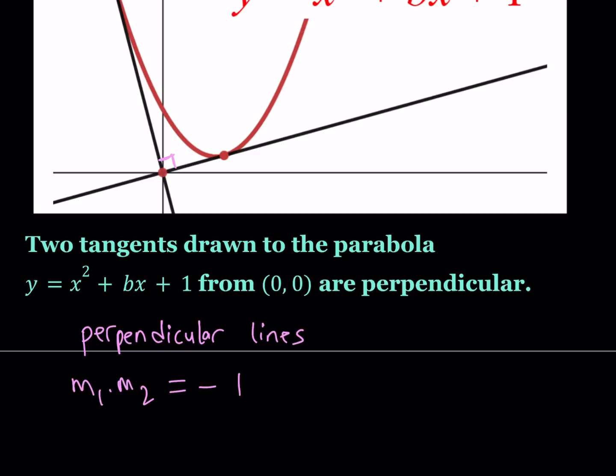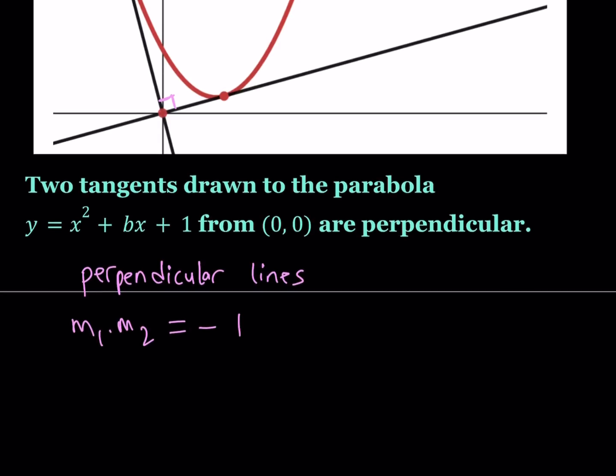So the tangents are not drawn at the origin but they're drawn from the origin. So we need to be able to write an equation for the tangent lines. Any line that goes to the origin can be written as y equals mx where m is the slope. So our tangents are going to look like this, y equals mx. But why only one line? Because different slopes basically is going to give us different lines. So this is the general equation for a line that goes through the origin, which is 0, 0.